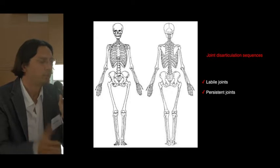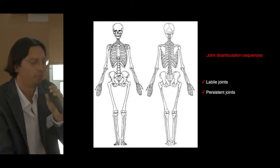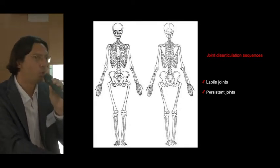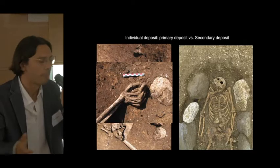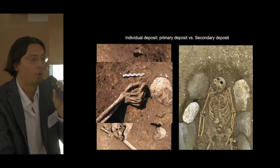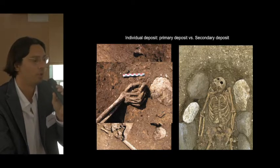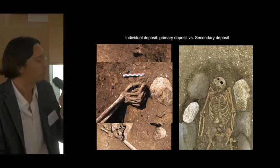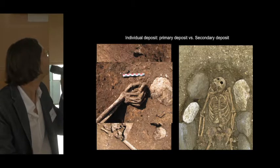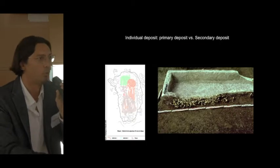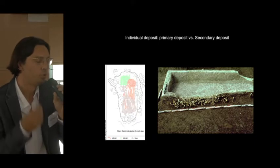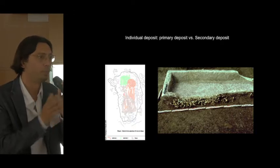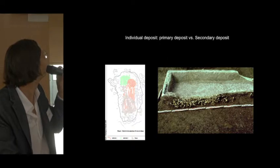So what is archaeothanatology? It is the archaeology of the dead. What is important is to understand how the dead was buried in the pit. For example, we can distinguish between a primary deposit and a secondary deposit. A primary deposit means burying a body; a secondary deposit means burying bones. With this type of careful analysis, we can differentiate between the different types of deposits.